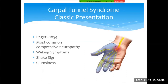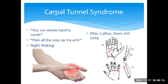People feel clumsy and drop things because they can't feel what they're touching at the fingertips. It commonly bothers people while driving — the vibration of the road through the wheel irritates the nerve. Despite the classic presentation, it's very frequent that people say all their fingers are numb, and the numbness extends all the way up the arm to the shoulder. A classic feature is that it wakes you from a dead sleep, the nerve compression is so bothersome.